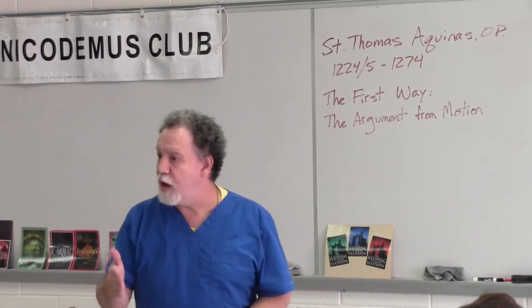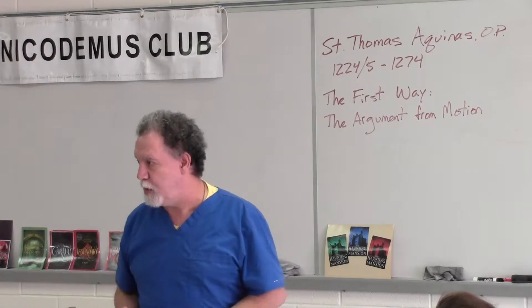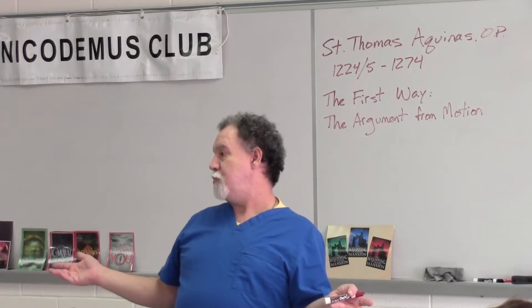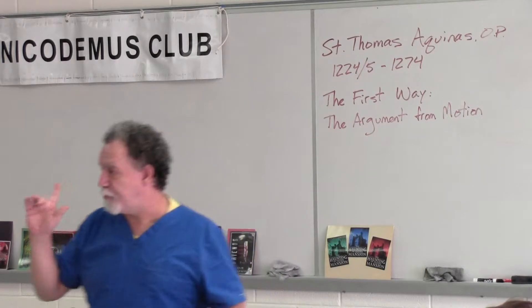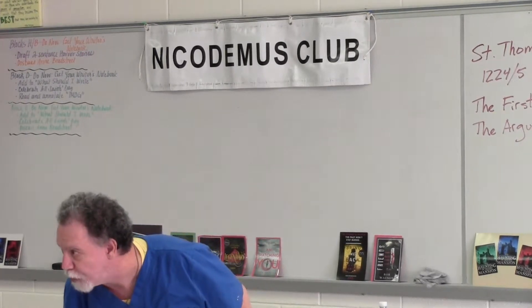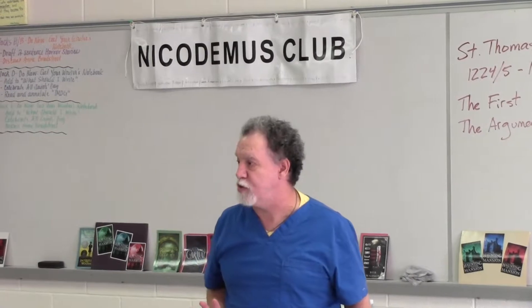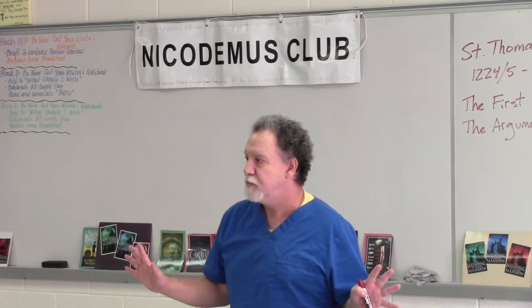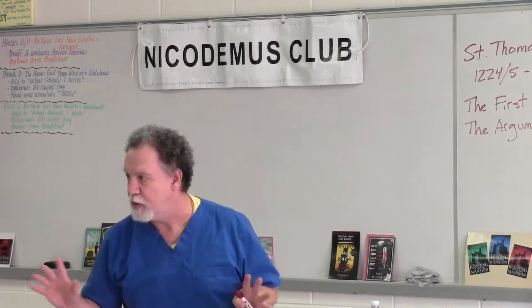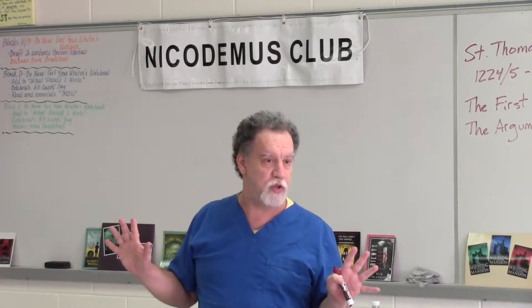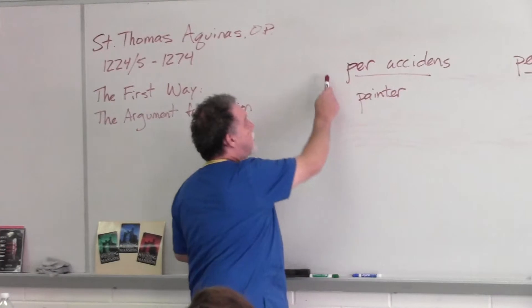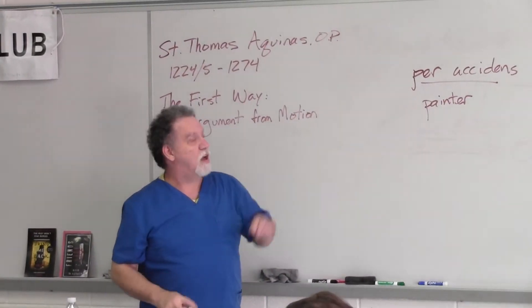Think of the domino example — one after another. After the last domino falls, what happens? Nothing. After the person who set the dominoes together pushes the first domino over, what part does he play in the rest of the equation? None whatsoever. The dominoes are on their own. The person who pushed them over has no relationship to their continued existence or motion. That's causes ordered per accidents — the painter example.